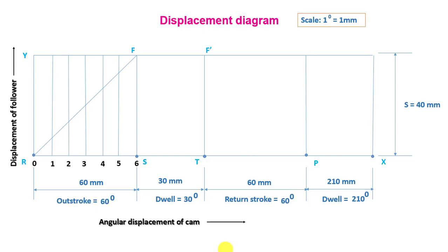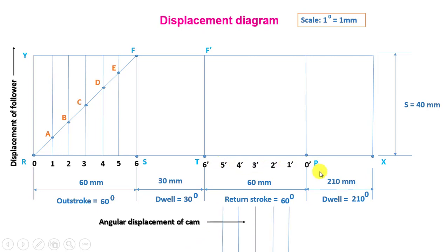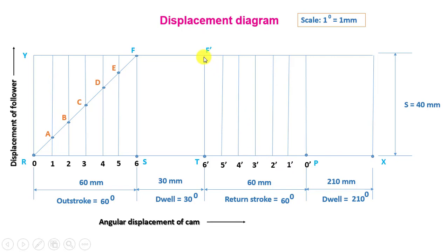The vertical lines intersecting RF give points A, B, C, D, and E. For the return stroke, divide it into six equal parts labeled 6', 5', 4', 3', 2', 1', and 0'. Draw lines through these points and connect F' with P. This line intersects the vertical lines at points A', B', C', D', and E'.